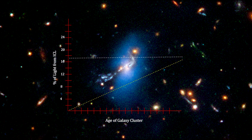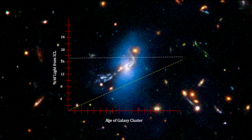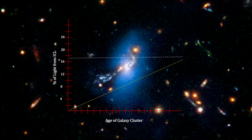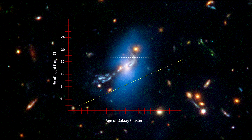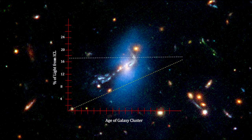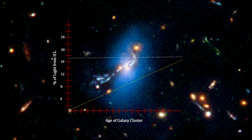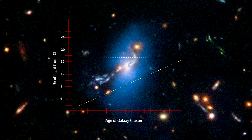This suggests that these stars formed at the same time as their galaxy clusters formed. These findings have significant implications for dark matter distribution analysis and the calculations for gravitational lensing, so critical for studies of the early universe.